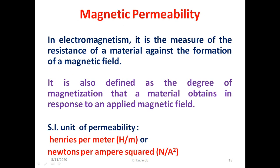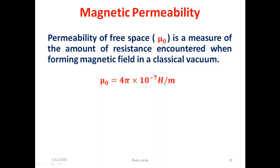Now we discuss about magnetic permeability. In electromagnetism, magnetic permeability is the measure of the resistance of a material against the formation of a magnetic field. It is also defined as the degree of magnetization that a material obtains in response to an externally applied magnetic field. The SI unit of permeability is henry per meter or newton per ampere square. The permeability of free space, denoted by mu zero, is a measure of the resistance encountered when forming a magnetic field in a classical vacuum. Its value is 4 pi into 10 raised to minus 7 henry per meter.